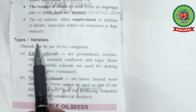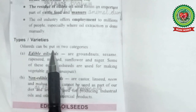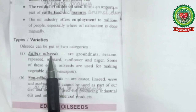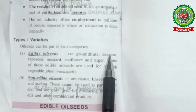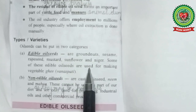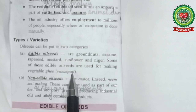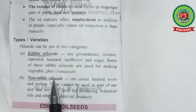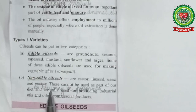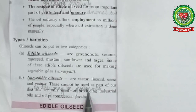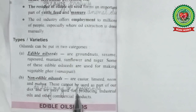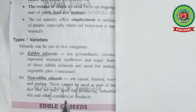Now let us study the types and varieties of oilseeds. Oilseeds can be put into two categories. Number 1, edible oilseeds: those that are part of our diet, like groundnuts, sesame, rapeseed, mustard, sunflower, and niger — some of these are used for making vegetable ghee, that is vanaspati. Number 2, non-edible oilseeds: those that cannot be used as part of our diet as they may be poisonous, such as castor, linseed, neem, and mahua. They are used for producing industrial oils and other commercial products.